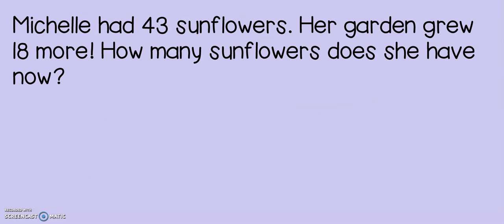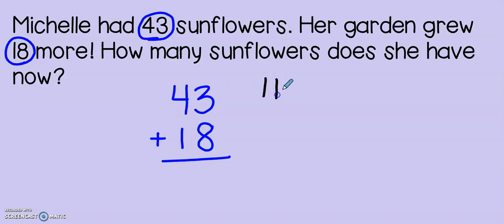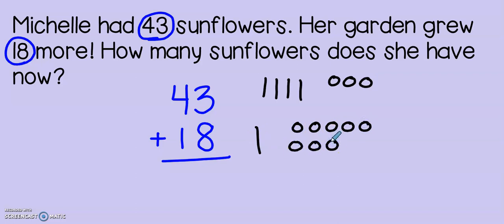Let's practice two story problems, or word problems, where we will need to add two-digit numbers. Michelle had 43 sunflowers. Her garden grew 18 more. How many sunflowers does she have now? Michelle started with 43 sunflowers and it says she got 18 more from her garden. If she's getting more, I know that my number's going to get larger. Let's draw: 10, 20, 30, 40, 41, 42, 43, and 10, 11, 12, 13, 14, 15, 16, 17, 18.